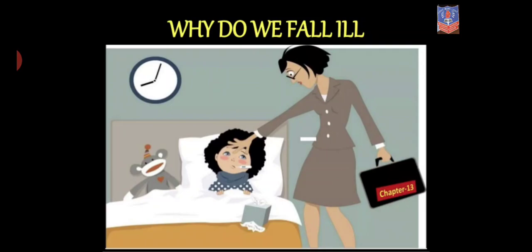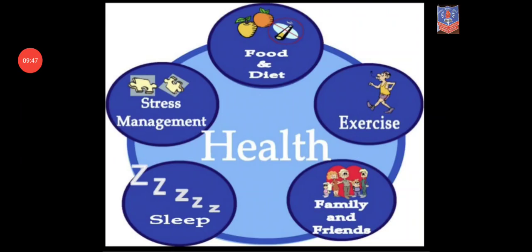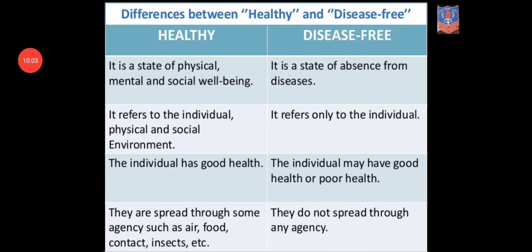I can show you some pictures regarding this chapter. I have shown you the factors to achieve good health: taking a balanced diet, doing daily work properly, doing exercise, and meditation. From the visual, health depends on food and diet, exercise, family, friends, time, taking good sleep, and stress management — these are the various factors required for good health. You can note this down in your notebook.